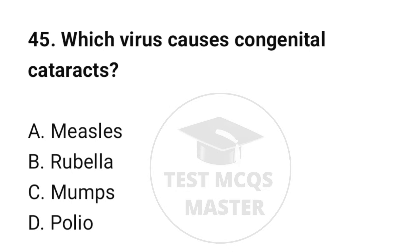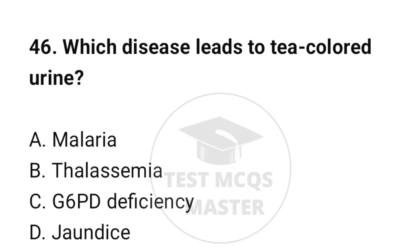Question number 45: Which virus causes congenital cataracts? The correct option is B: Rubella. Question number 46: Which disease leads to tea-colored urine? The correct option is C: G6PD deficiency.